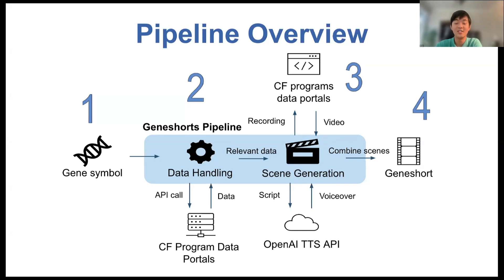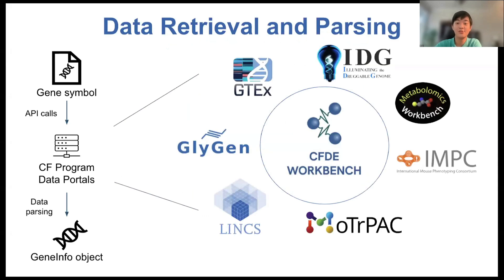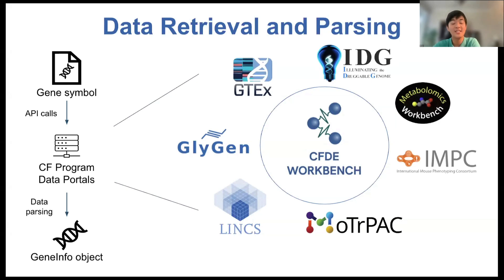We can now take a look at each of these steps in more detail. In the data retrieval and parsing step, we use the gene symbol inputted by the user to find data from different data coordinating centers through API calls, all accessible through the CFDE Workbench data portal. We can, for instance, use the Metabolomics Workbench to find pathways for a particular gene, or access the LINCS L1000 dataset to find drugs which upregulate or downregulate expression of that particular gene. This data is all stored inside a GeneInfo object, which organizes the information retrieved from each of these programs.